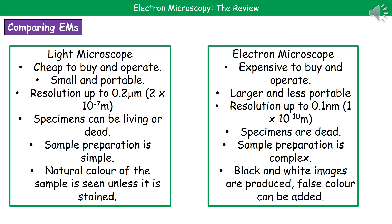If we think about the specimens themselves, in a light microscope they can be either living or dead. Whereas with the electron microscope, specimens have to be dead because it must be in a vacuum, which means no particles are present, otherwise it will not work. The preparation of samples for a light microscope is very simple, whereas it's far more complex for the electron microscope. Finally, the light microscope produces images in the natural colour of the sample — unless a stain is applied — whereas the electron microscope produces black and white images, and generally people add false colour later to reveal certain structures more clearly.